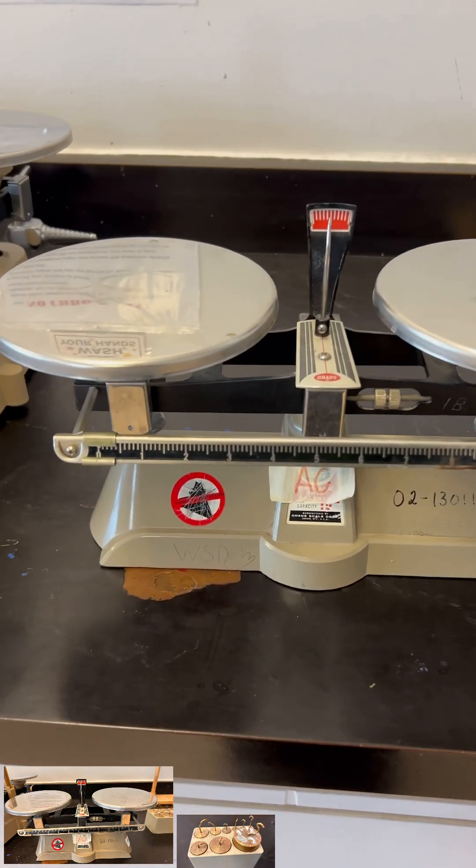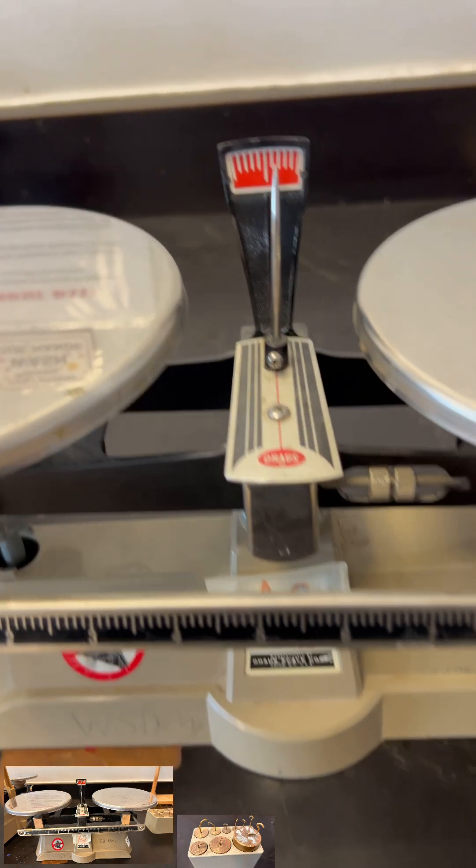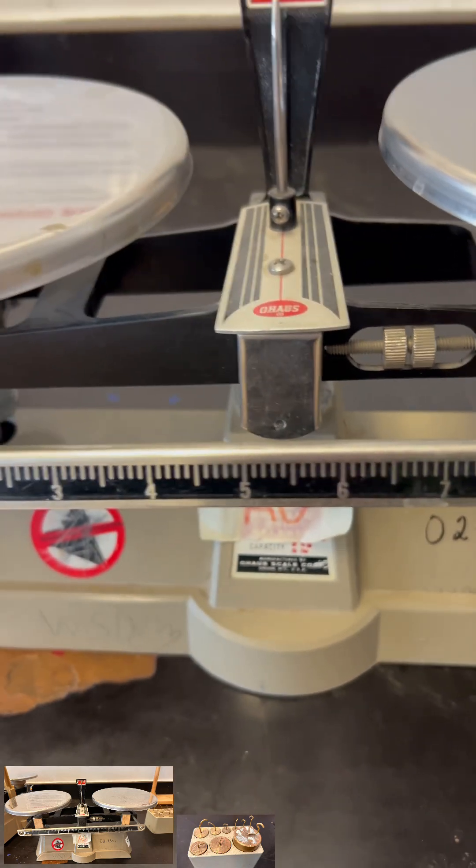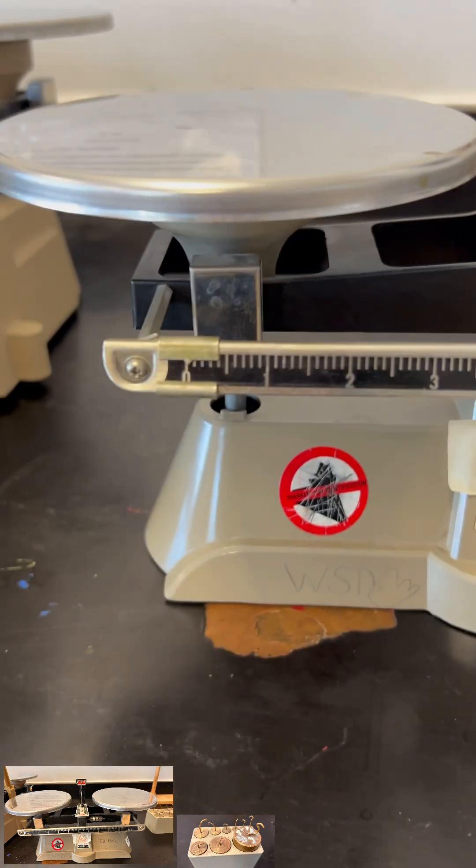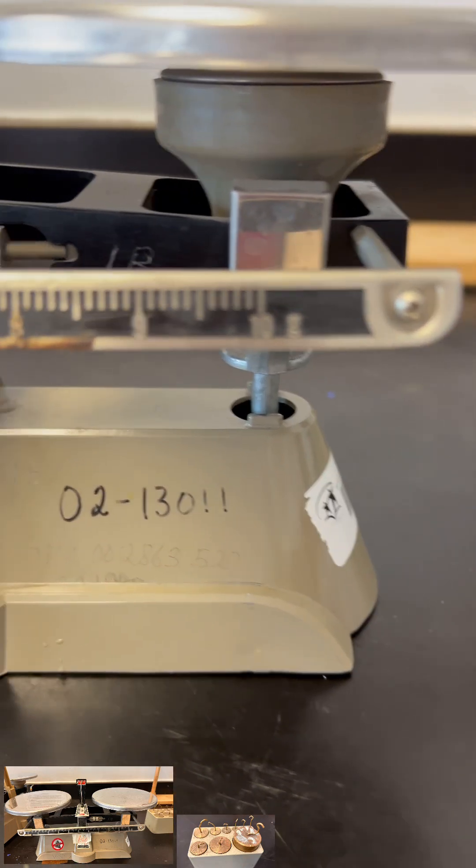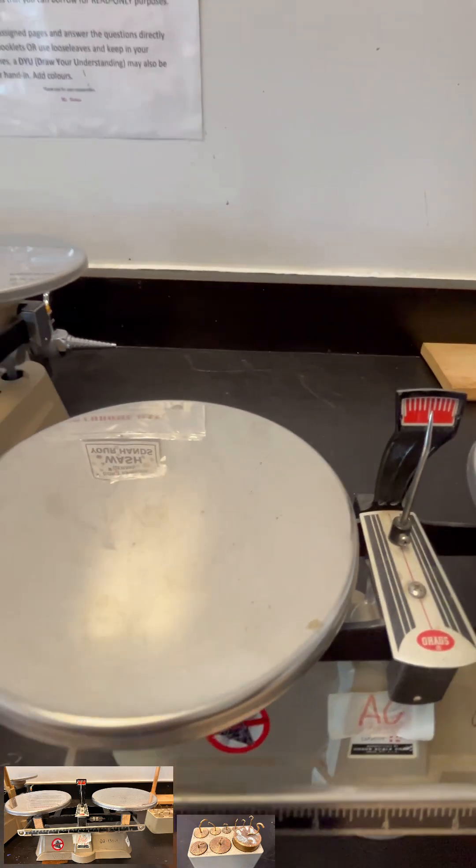Of course, we have to make sure that the needle point should be at the center, or if it's not, you can always make adjustments here. This kind of platform balance can weigh a maximum of up to 10 grams. So let's start weighing now.